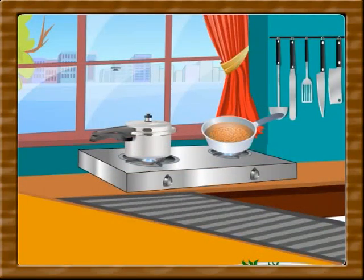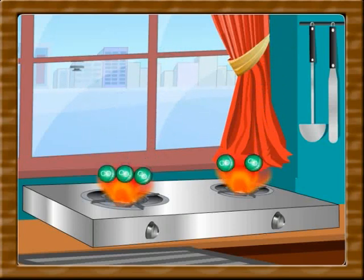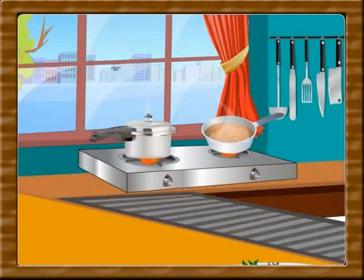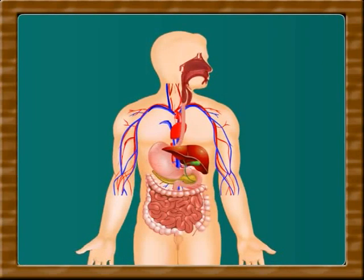The fact is that fuels contain carbon and its compounds. When we cook food, fuel is burnt — that means carbon reacts with the atmospheric oxygen. This reaction produces heat, which is used for cooking food. The reaction takes a few seconds or a couple of minutes. Digestion of food in the human body is also a type of chemical reaction.